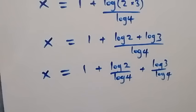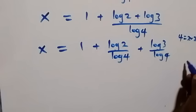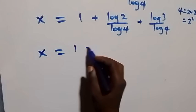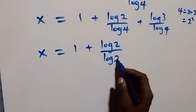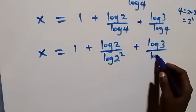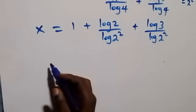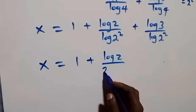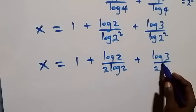We can also simplify the denominator: 4 can be written as 2 squared. So we have x equals 1 plus log 2 over log(2 squared), plus log 3 over log(2 squared). Applying the power law, 2 comes down, giving x equals 1 plus log 2 over 2·log 2, plus log 3 over 2·log 2.